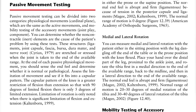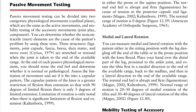We have medial and lateral rotation. When the patient is either in the sitting position with the leg dangling over the end of the table, or in the prone position with the knee flexed, we place our hand on the distal part of the leg, proximal to the ankle, and rotate the tibia first in the medial direction to the end of available range, then back to the midline, then to the lateral direction. The normal end feel is firm due to ligament. The normal range of motion is 20 to 30 degrees for medial rotation and 30 to 40 degrees for lateral rotation.